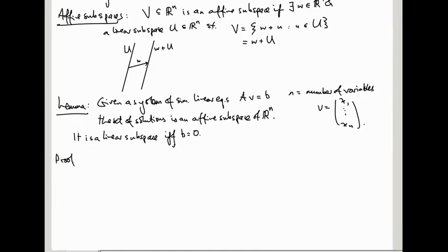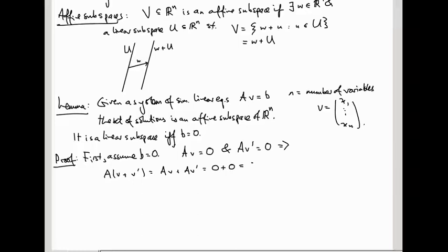First, let's assume that B is 0. And then we'll prove that the set of solutions is a linear subspace. So then, if V is a solution and V' is a solution, then A(V plus V') is AV plus AV', which is 0 plus 0, which is 0. So V plus V' is a solution.